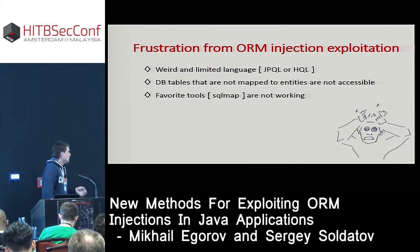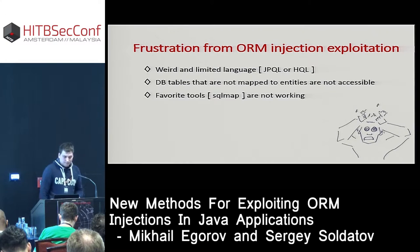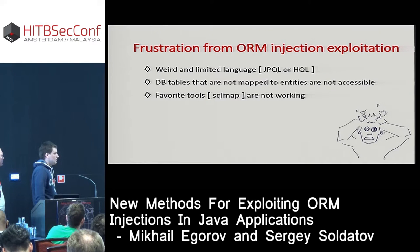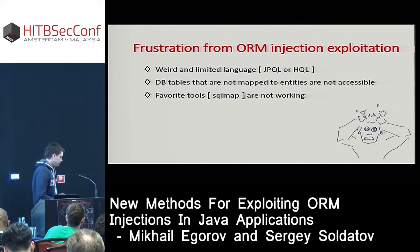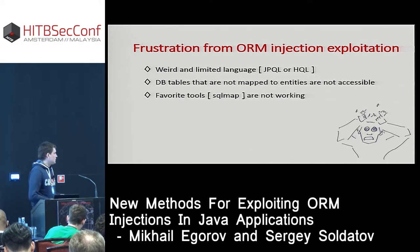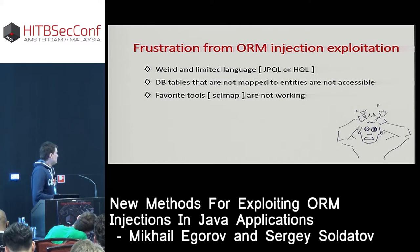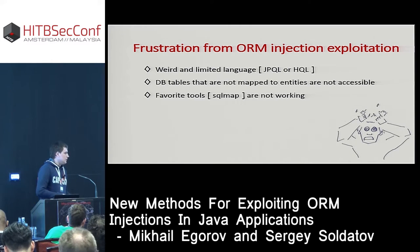An unequipped attacker will likely feel frustration trying to exploit ORM injection, and there are three main reasons. First, JPQL and HQL have a weird and limited syntax, so not all SQL statements will work — for example, JPQL does not support UNIONs. Second, from a JPQL query you can only access tables mapped directly to entity classes; trying to access unmapped tables will throw an exception. Third, your favorite tools for SQL injection exploitation will not work with ORM.